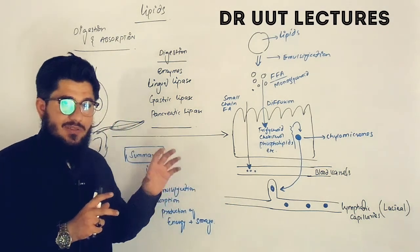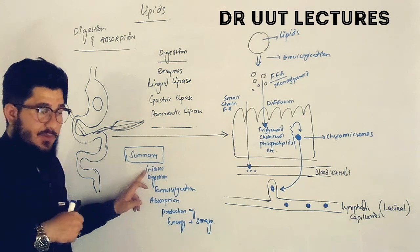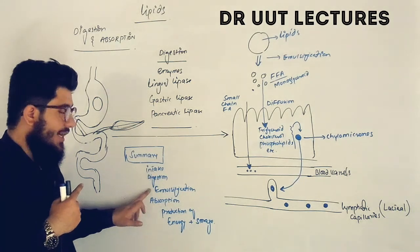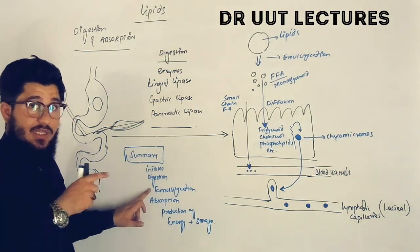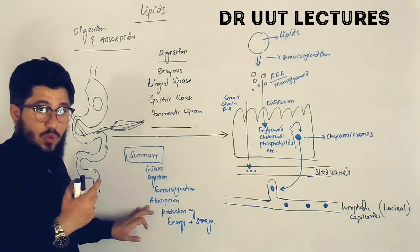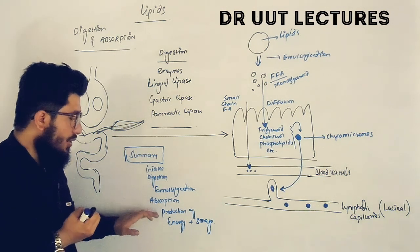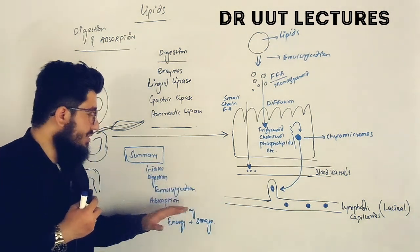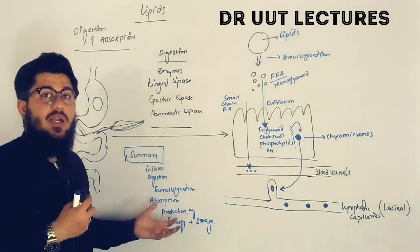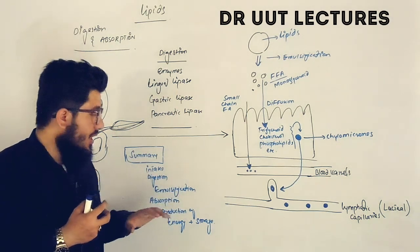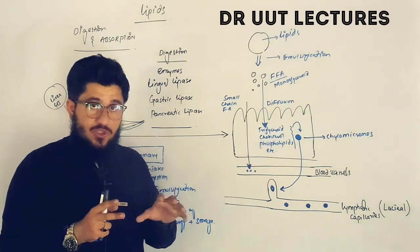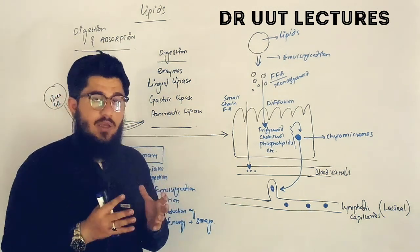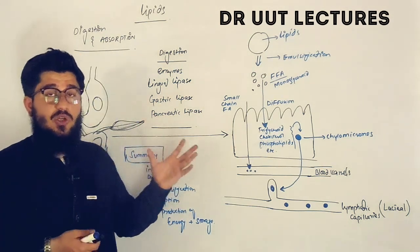Let's summarize the lecture. First, ingestion of lipids occurs. Then digestion takes place — emulsification is done by the bile salts, followed by the action of pancreatic lipases, completing digestion. After digestion, absorption occurs, and the absorbed lipids travel through blood vessels and lacteals. Lipids provide energy to the body, and excess lipids are stored. Whenever there is a need for energy, these stored lipids are utilized to produce the required energy.